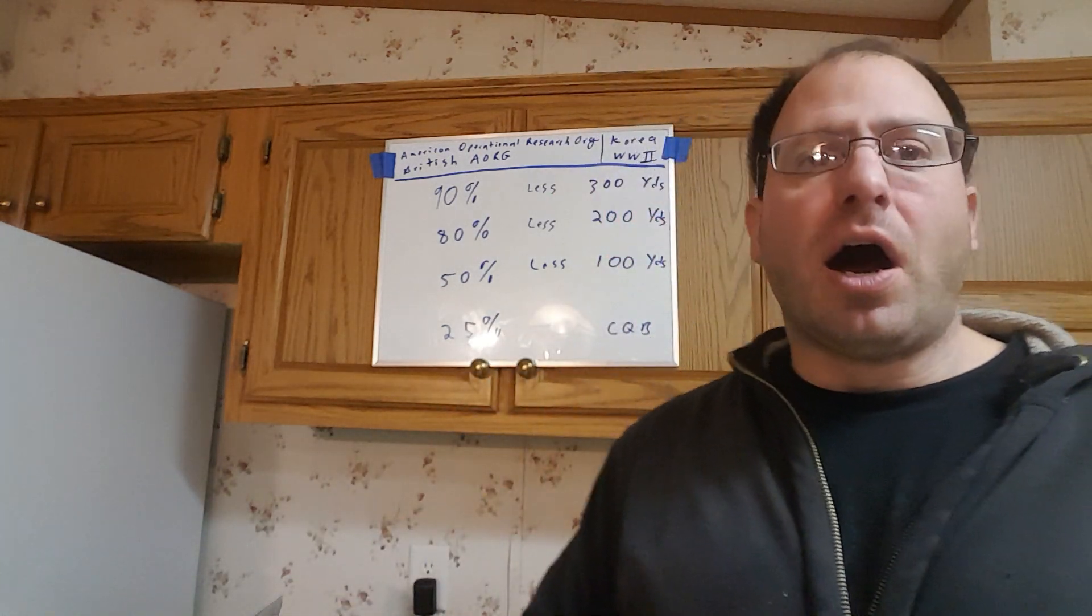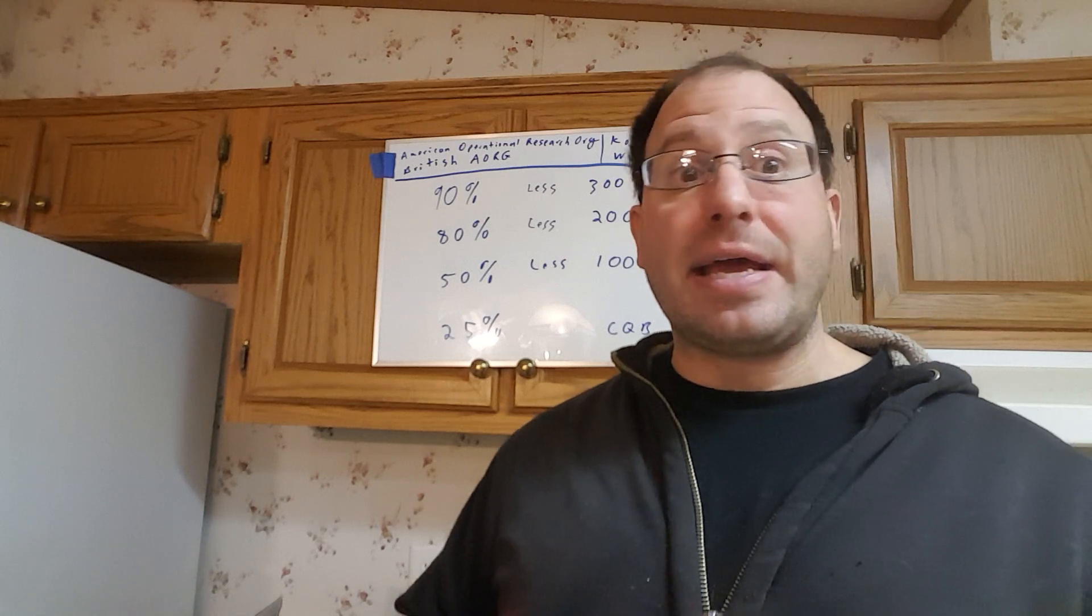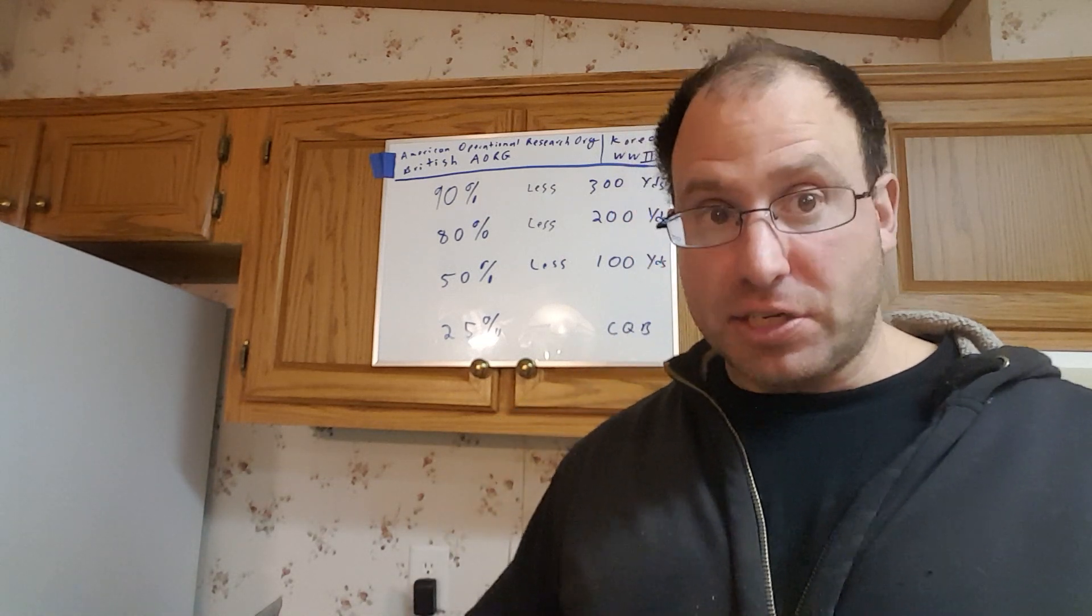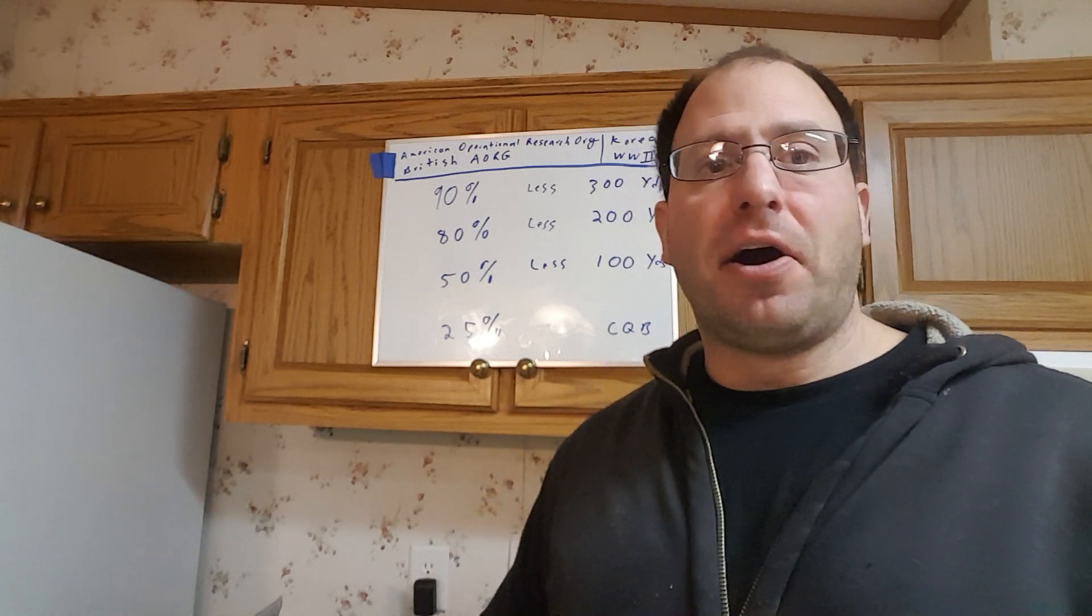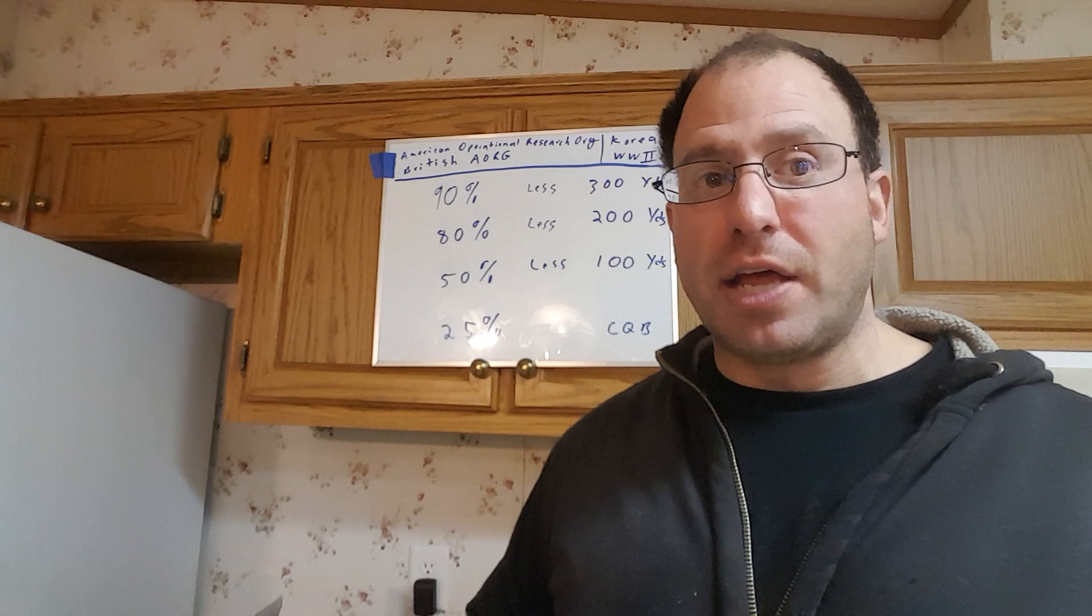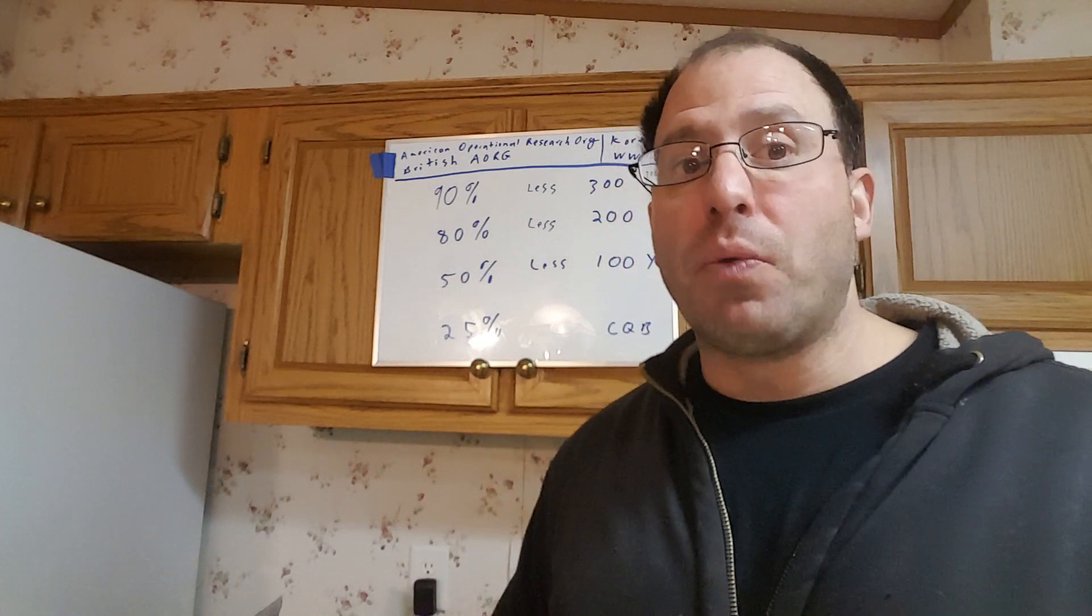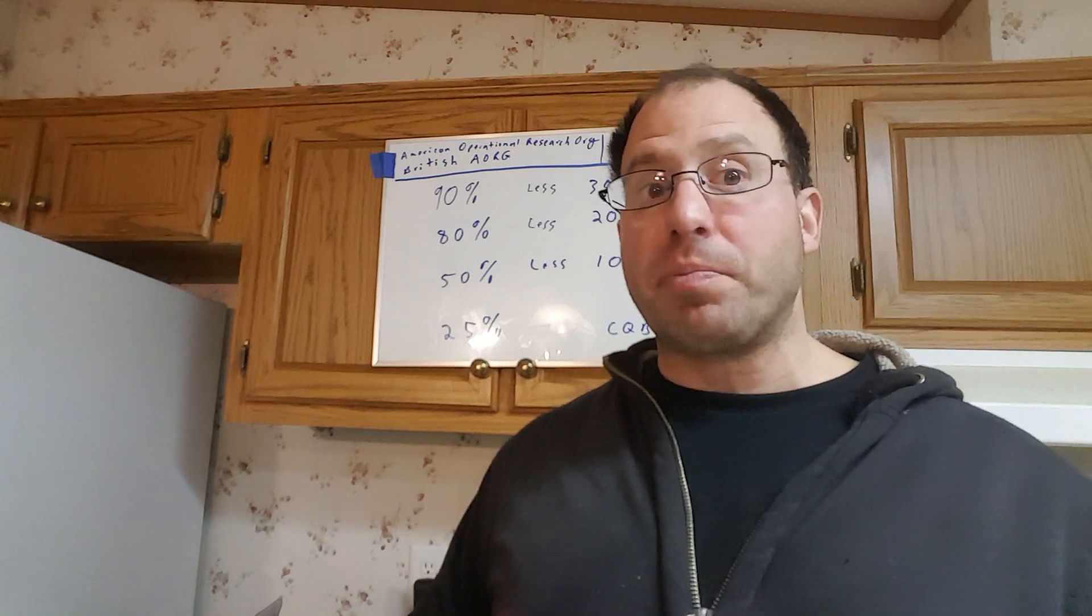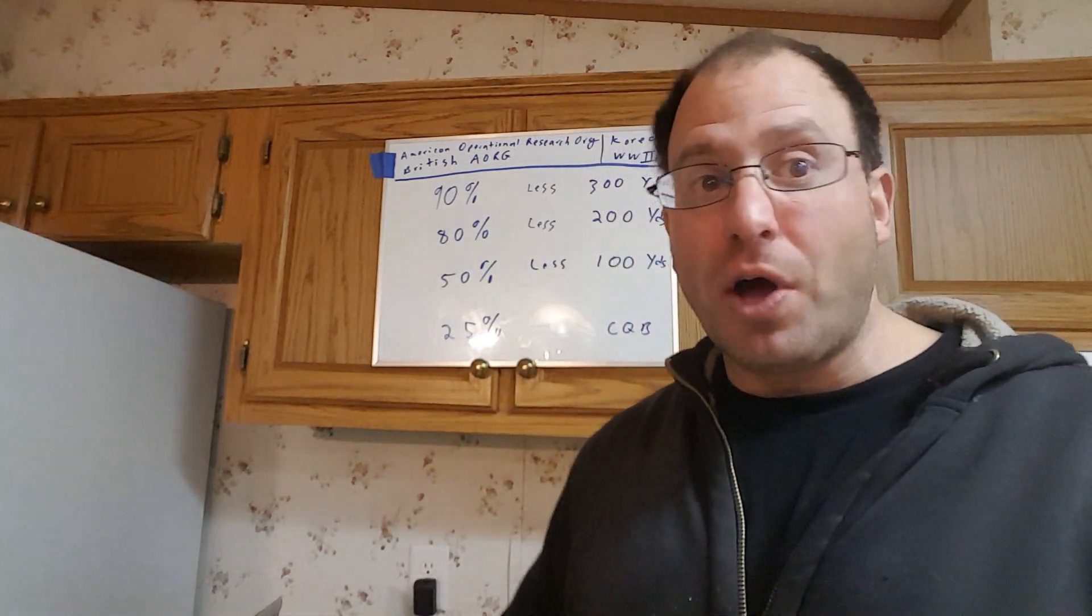Hello everyone, welcome back. Today we're going to be looking at expected engagement distances for a militia. The situation is that it's the mid 1980s and the Soviets and the Cubans have invaded the United States. They're occupying half of it and we have people caught behind enemy lines. They're forming militias to fight the communists. Of course I'm talking about the movie Red Dawn.